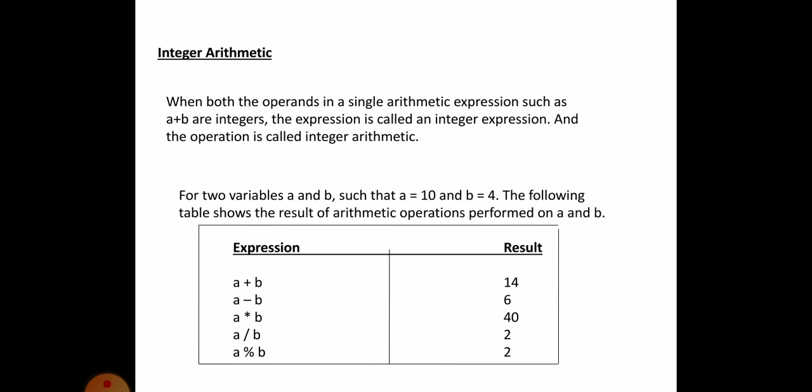Next is integer arithmetic. As the name indicates, when both the operands in a single arithmetic expression such as a plus b are integers, the expression is called an integer expression. Integer arithmetic is an operation performed on an arithmetic expression which contains only integer values. The integer arithmetic expression always yields an integer value — the result of an integer arithmetic will always be an integer.